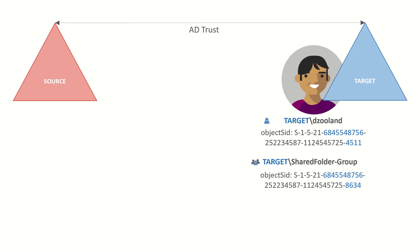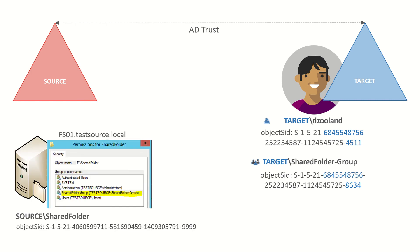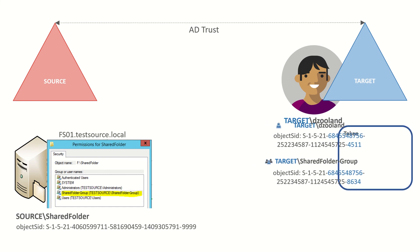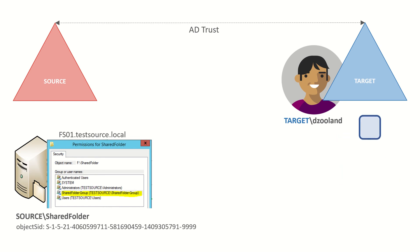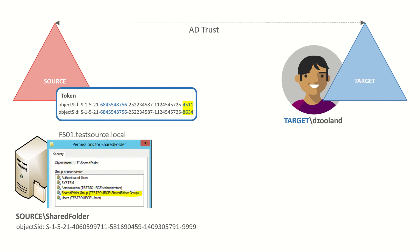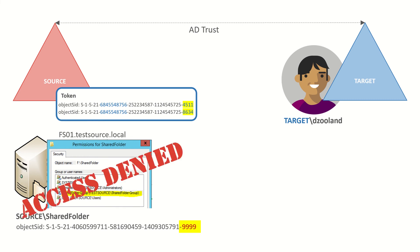If Derek were to just log on using that new target account right now without having his ADMS migration, here is what would happen when he tries to access his files back in the source domain. When he logs on, his access token gets populated with his target domain user and group object SIDs. He will then present his access token to the server across the AD trust. The file server will examine the contents of his token and compare it against the permissions defined in the access control list. Because Derek does not have a match, he's going to receive an access denied.